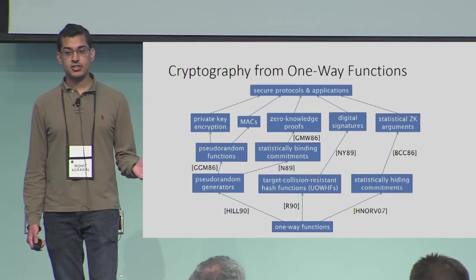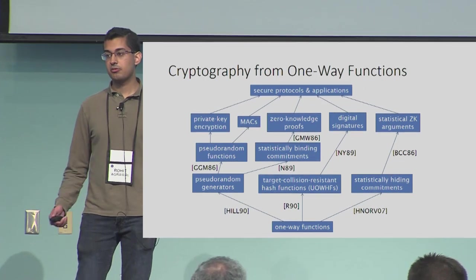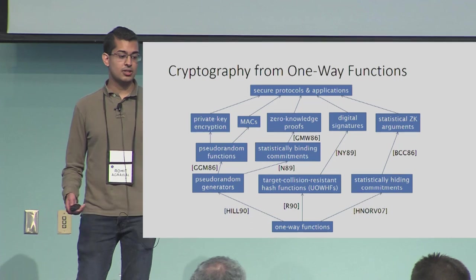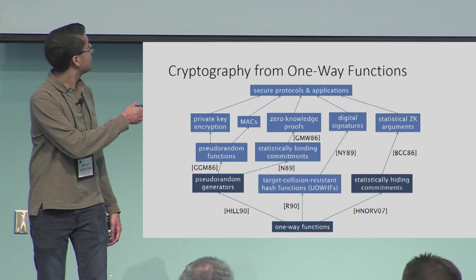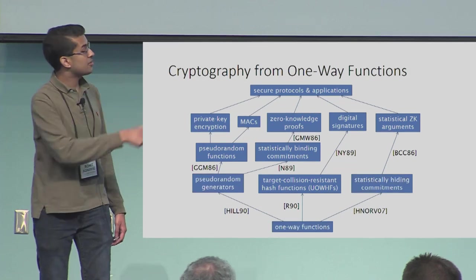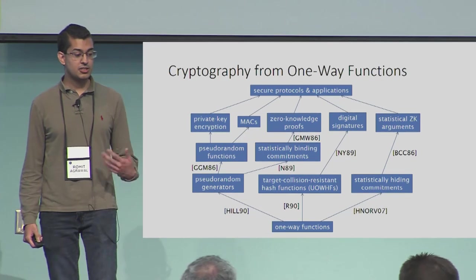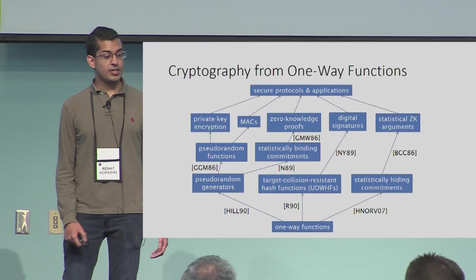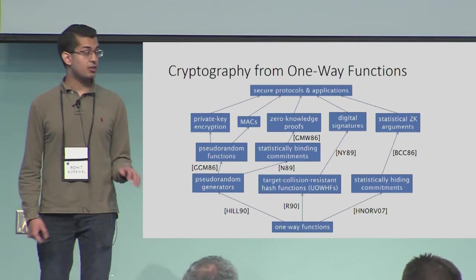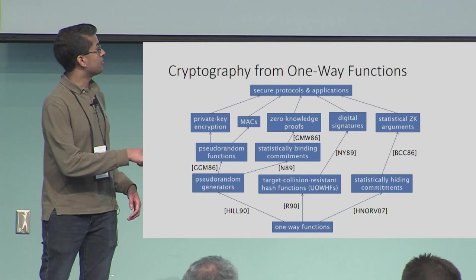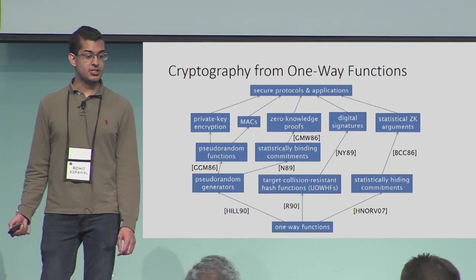The way these constructions of more useful primitives and protocols work is that they don't actually work directly with one-way functions, which are very unstructured and hard to manipulate for a construction. They instead deal with elements of this bottom layer, which are more structured primitives that are easy to use in constructions and easy to reason about. They thereby isolate the need to deal with one-way functions and that hardness to this bottom layer of reductions. And it's this bottom layer that we're going to focus on today.